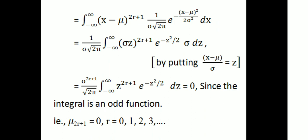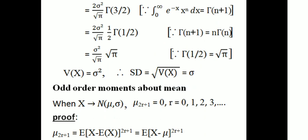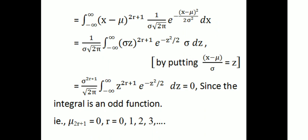For a continuous random variable, expectation is written as the integral from minus infinity to infinity of (x minus μ) raised to 2r+1, times the normal probability density function: 1 divided by σ√(2π), times e raised to minus (x minus μ)² divided by 2σ², times dx. This is the probability density function of the normal distribution.